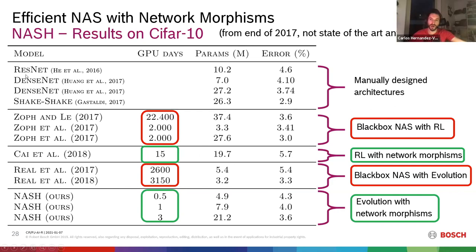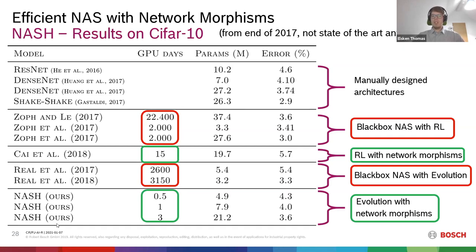Regarding which layers to apply network morphisms to: we do the simplest thing — sample a layer uniformly at random. We have a set of mutations — adding a layer, increasing layer size, adding a skip connection — choose one at random, then choose the position uniformly at random. That's not optimal, and there are certainly ways to improve, but we don't do anything smarter than that.